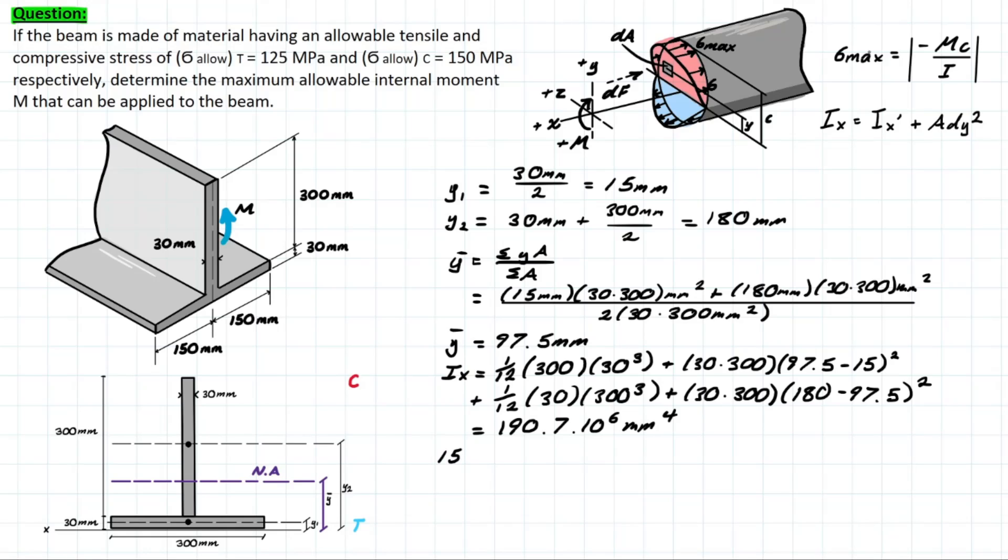We need to plug in that the max stress or the allowable stress in the compressive fiber is going to be 150 newtons per millimeter squared. We are solving for the moment, and we want to determine what the max moment is, so we're going to have to solve for both the tensile and compressive limits. We have moment for the compressive side, and we need to determine what the c value is going to be. That's simply going to be this entire height subtracting y-bar. So we have 330 subtracting 97.5 millimeters, and then that's all over our inertia value, which we already solved for, which is 190.7 times 10 to the 6 mm to the 4th.